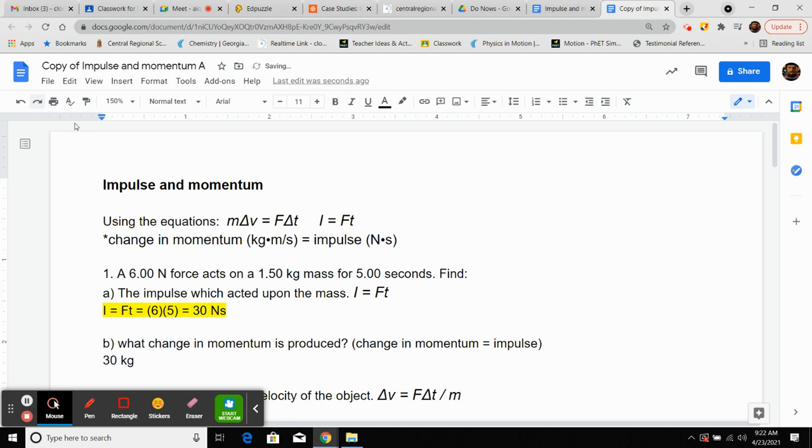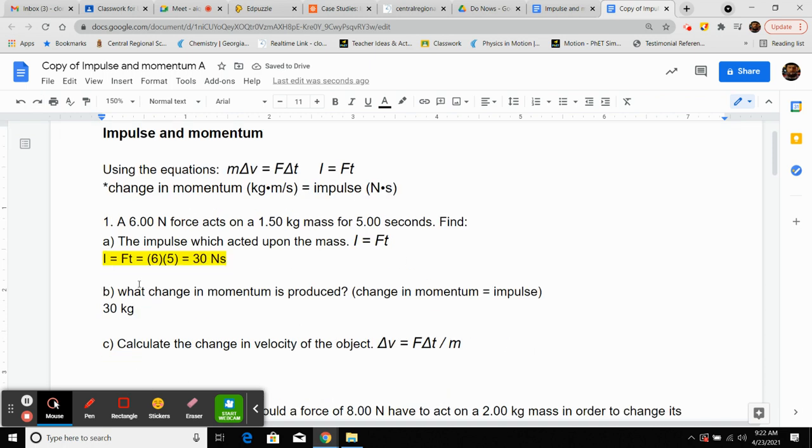But now in this one, they ask what does the change in momentum produce? Well, guess what? The change in momentum is equal to the impulse. We looked at that in the video in the Ed Puzzle. We talked a little bit about it yesterday. So if you know what the impulse is, you know exactly what the change in momentum is. There's no math involved. It's literally going to be 30 except you're using a new unit. Use this unit here, the kg meters per second.